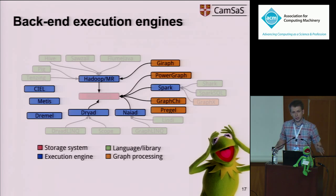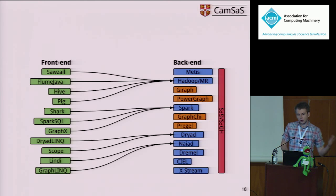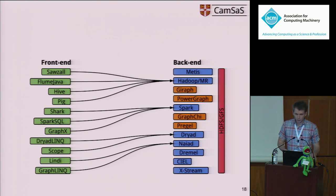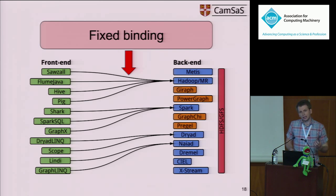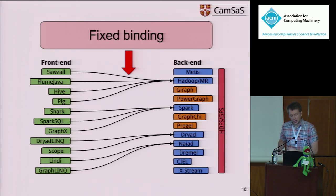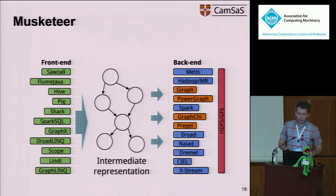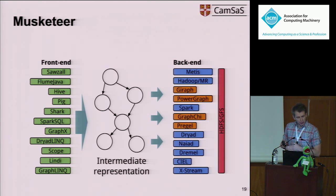With this taxonomy in mind, if we rearrange the figure putting front-end languages on the left and back-end execution engines on the right, things start to look better. However, there's still a problem: if Kermit writes his computation in his favorite front-end language, Hive, his computation will always run in Hadoop MapReduce. This creates a fixed binding — Kermit is locked into a back-end execution engine, stopping him from benefiting from others. It would be nice to translate from front-end languages into an intermediate representation and then to back-end execution engines. This is exactly what Musketeer does.